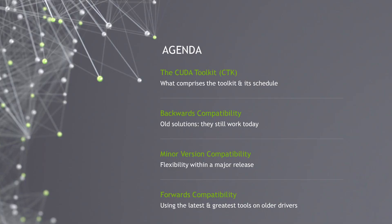The agenda is short and sweet. First, we'll go over the CUDA toolkit, often abbreviated CTK — what it means and some of the major parts of it that are specific to compatibility. Next, we'll talk about backwards compatibility, which is simply bringing old applications onto newer hardware. Follow that with details on flexible compatibility, which often helps on systems where you as a developer might not be able to count on a specific driver or toolkit being installed. Finally, we'll go over forward compatibility, which is using newer toolkits on older drivers.